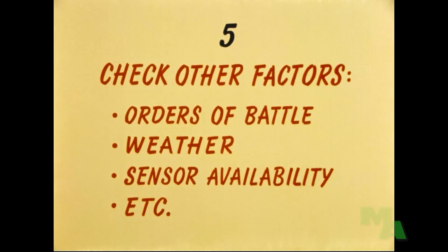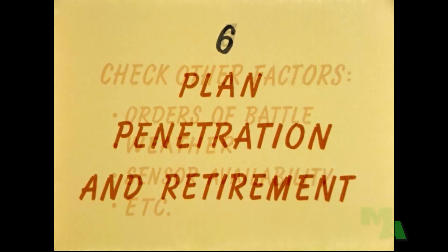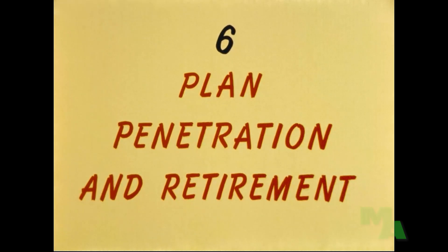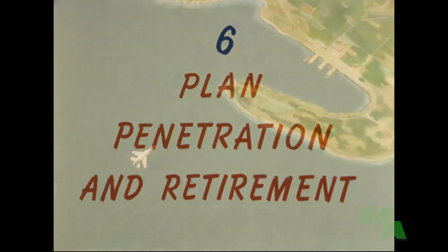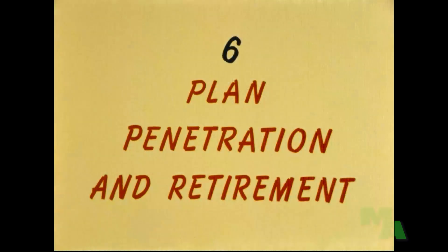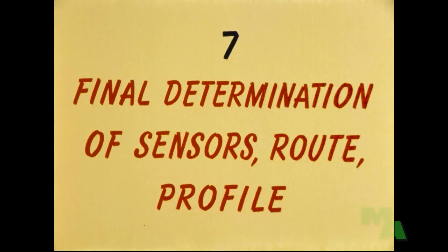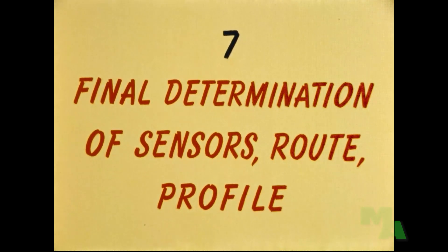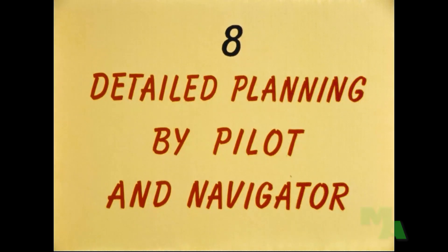All such factors should be checked. Another factor that will affect route planning is selecting penetration and retirement points. If entry and exit are made over prominent landmarks whose coordinates are known, the information may be useful later in correcting navigational data. Only after consideration of all factors affecting the mission can a final determination be made on sensors, route, and profile. The result is often a compromise. At this point, the pilots and navigators who are going to fly the mission will begin their own more detailed planning.